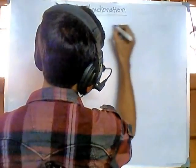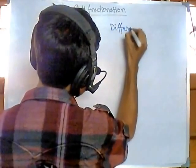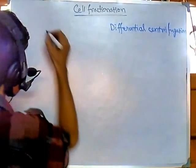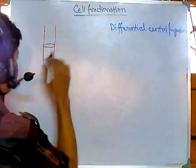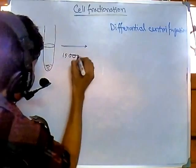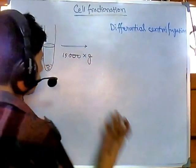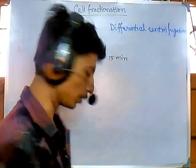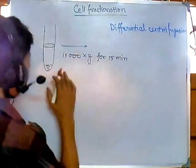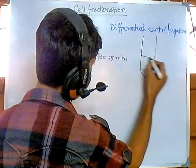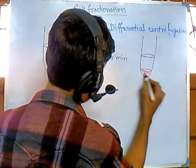In differential centrifugation, we crack open the cell. We have a test tube with our cell suspension. It is rotated first at a very low speed — around 500 to 1000 times G, where G is the gravitational force — for about 15 minutes. After this spin, the heavy materials settle at the bottom of the tube.